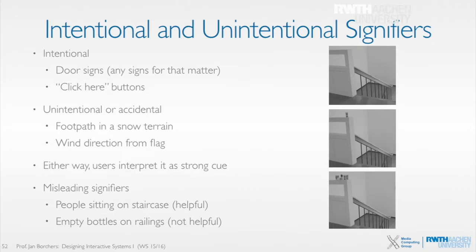Unintentional signifiers — for example, if you're in a field in winter with lots of snow and there's a path where other people have already walked, you know that's probably the path to take. Or a flag: it wasn't put there to tell you where the wind came from, but you can still get that information. Users don't distinguish between intentional and unintentional — they still take both as strong cues about what they can do.